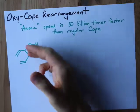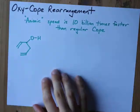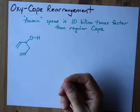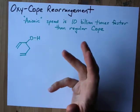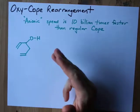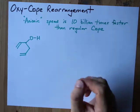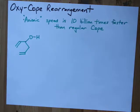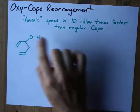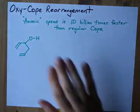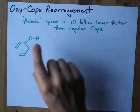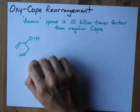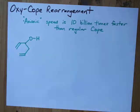The oxy-COPE rearrangement is similar to the COPE rearrangement, except it is generally not reversible because you're going to make a tautomer of the enol that's made — it's going to make a carbonyl group, which takes the enol out of equilibrium. The idea behind an oxy-COPE rearrangement is the same as COPE, except you're going to have an OH on the third carbon between the two dienes.